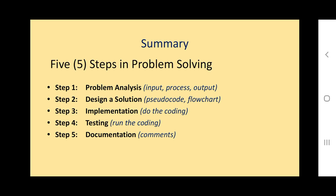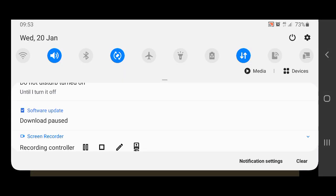Summary for this chapter: there are five steps in problem solving. First is problem analysis - input, process, output. Second is design a solution - pseudocode and flowchart. Third is implementation - you do the coding. Fourth is testing. Fifth is documentation - comments. That's all for today, have a nice day, may God bless you all.